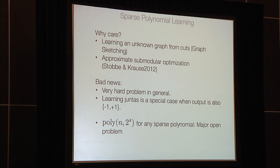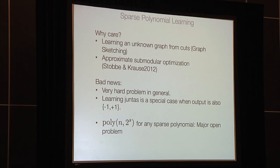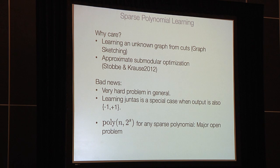The bad news is that this problem is very, very hard. There's a classical learning theory problem called learning juntas — a junta is a function depending only on k variables, which can have at most 2^k terms, so s is 2^k. Learning juntas is a huge open problem; learning it in polynomial time would be a big breakthrough.